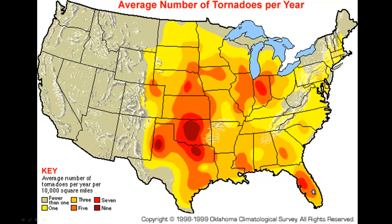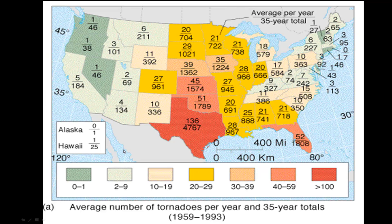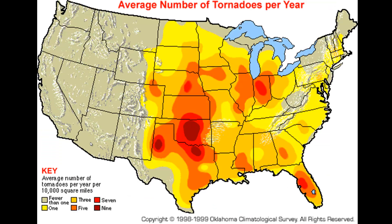Simply because we see something on a map, we often accept it uncritically and say it has to be right because it was on a map. But we need to think about the fact that maps are displaying information that has been generalized, simplified, and interpreted. There's a lot of room for lying with a map, and even if unintentional, you can end up miscommunicating what the reality is on the ground.